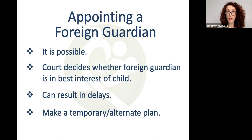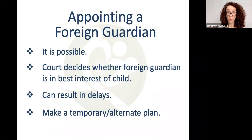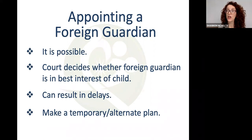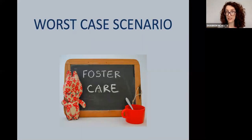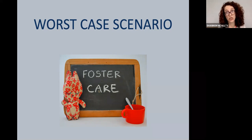Even if the court does appoint a foreign guardian, there will definitely be delays — we're talking at least six months to a year. It's really important to have an alternate or temporary plan so that somebody is taking care of your children during the guardianship proceedings, because your child will not be able to get on a plane. The worst case scenario is that if there's no guardian even on a temporary basis, your child could end up in the foster care system as a ward of the state.